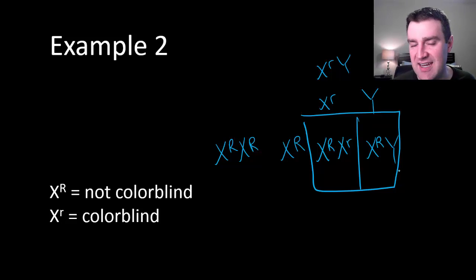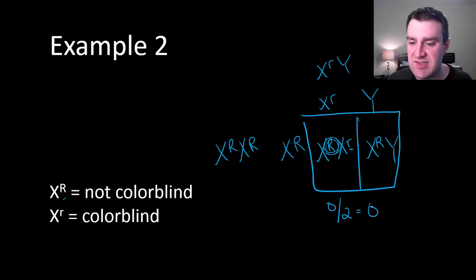If I were interested once again, I know I didn't write a question here, but maybe the odds of having a colorblind child, we see that really neither child here will show colorblindness. This daughter here will carry the recessive allele, but the dominant trait will dominate. And so neither child is 0 in 2 chance of having a colorblind child here.